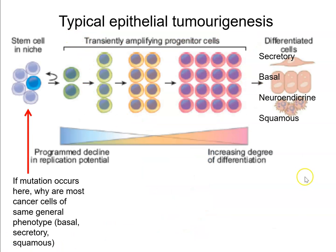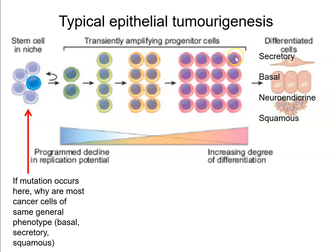To understand stem cells and their progeny in more detail, consider typical epithelial tumourigenesis. Stem cells in a stem cell niche give rise to transit amplifying progenitor cells, which eventually produce a large body of cells that differentiate into secretory, basal, neuroendocrine, or squamous epithelium. A single stem cell can give rise to both the basal and secretory cells of tissues such as the prostate or breast.